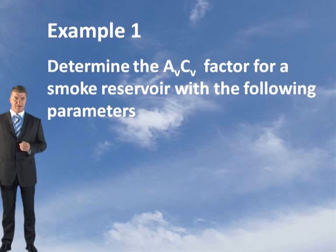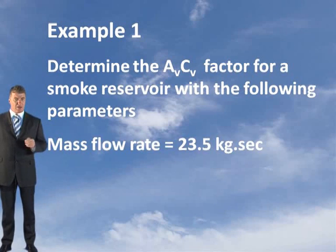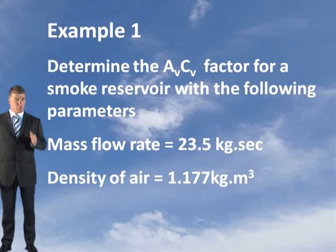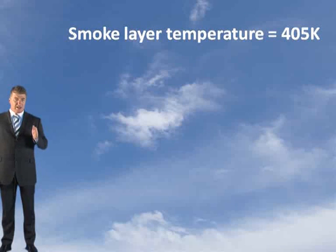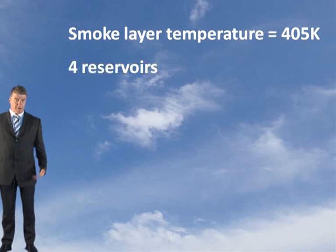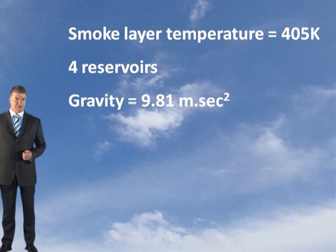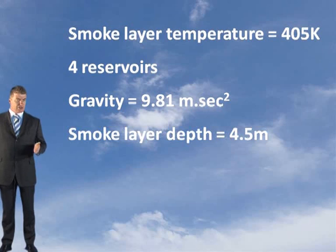Determine the AVCV factor for a smoke reservoir with the following parameters. Your mass flow rate of smoke is 23.5 kilograms per second. The density of air can be taken as 1.177 kilograms per meter cubed. The temperature of the smoke layer is 405 degrees Kelvin. The building has four reservoirs. Acceleration due to gravity can be taken as 9.81 meters per second squared. Your smoke layer depth is 4.5 meters.